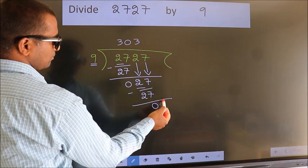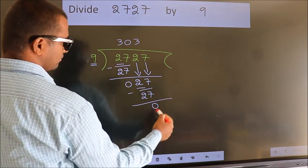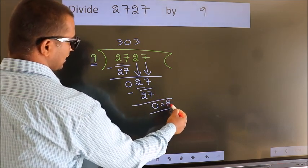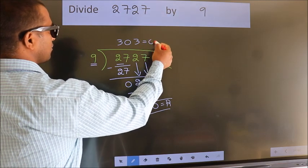No more numbers to bring down. So we stop here. This is our remainder. This is our quotient.